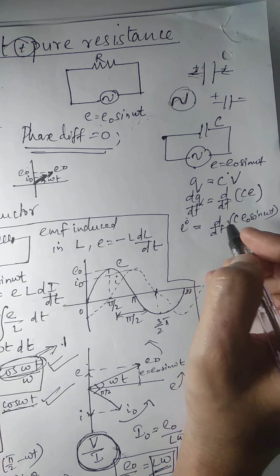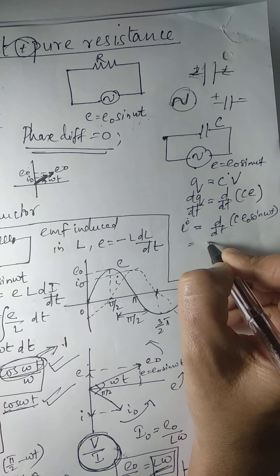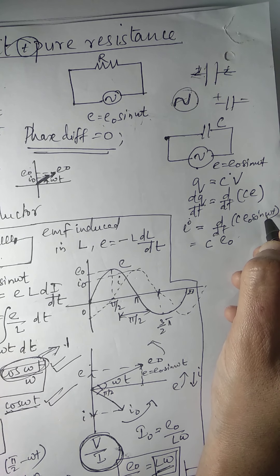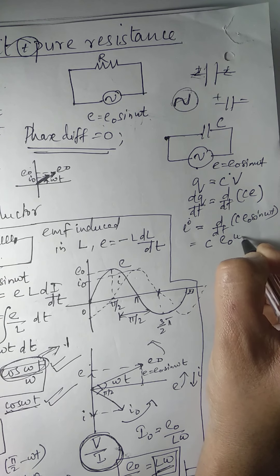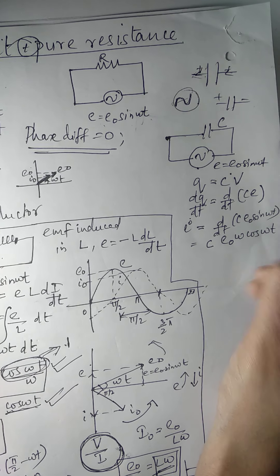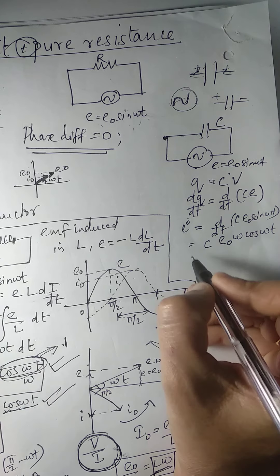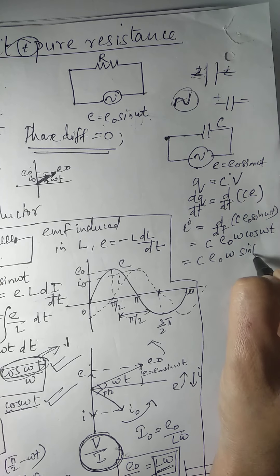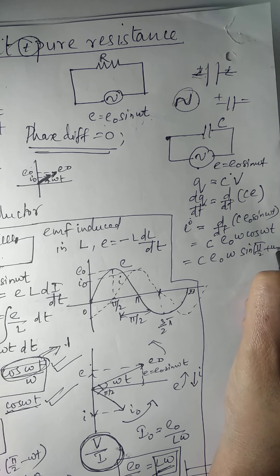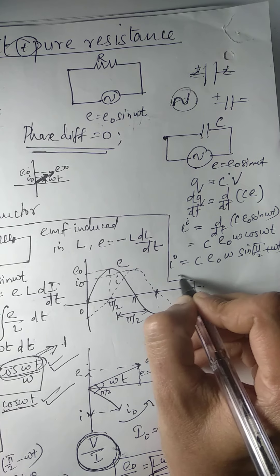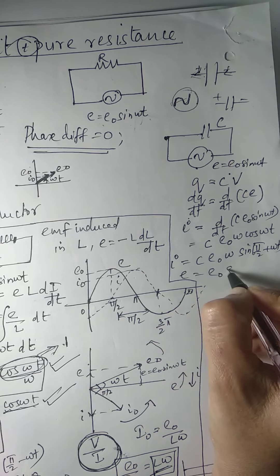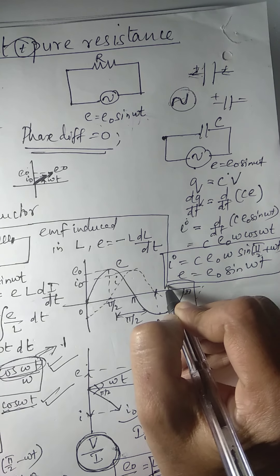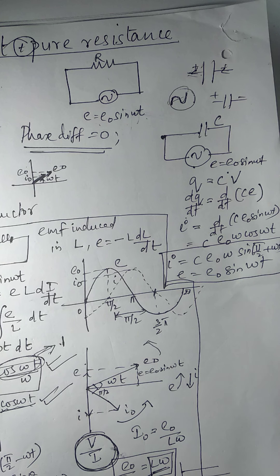When you differentiate, you will get I = CE₀·ω·cos(ωt). This cos(ωt) we can write in terms of sin as sin(90° + ωt). We already have E = E₀ sin(ωt). So these are the two equations when you are connecting a capacitor to a circuit.